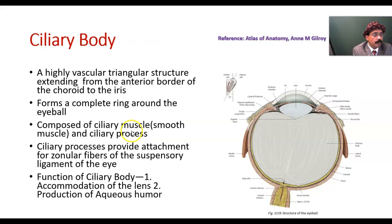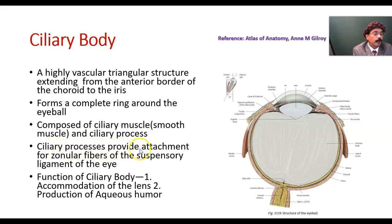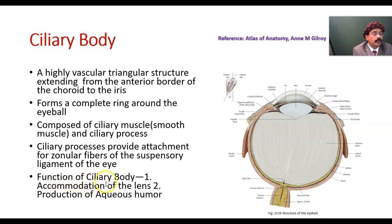The ciliary body is composed of ciliary muscle, which is smooth muscle — so its nerve supply is autonomic — and ciliary processes. Ciliary processes provide attachment for zonular fibers of the suspensory ligament of the eye. The function of the ciliary body is to accommodate the lens, so the lens convexity will be increased.